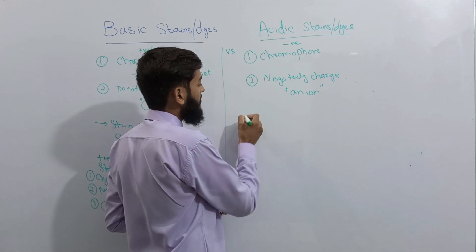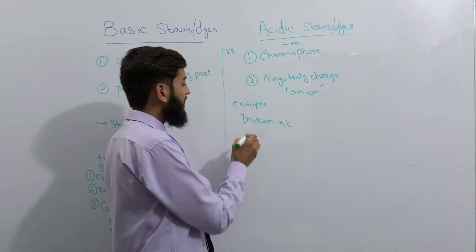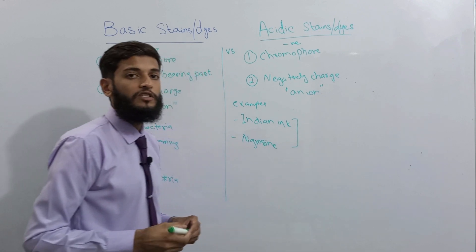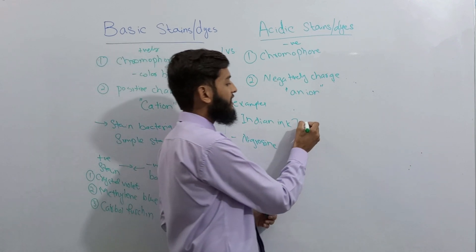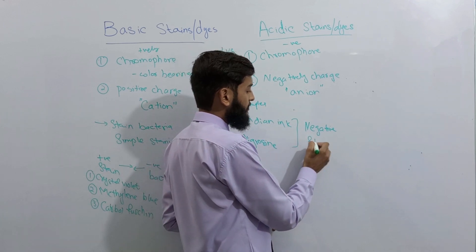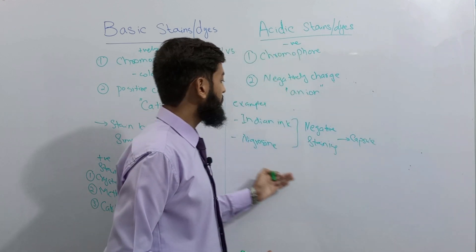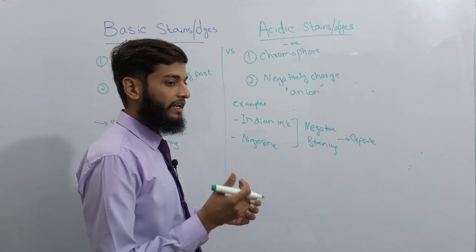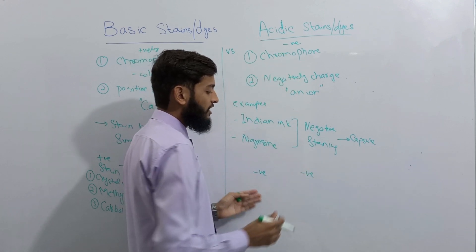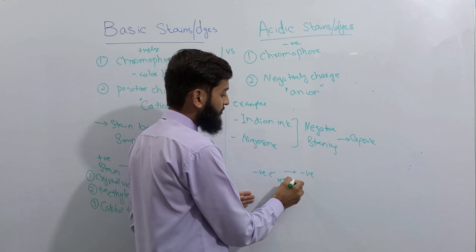Examples of acidic stains are Indian ink and nigrosine. Both of these stains are used in a procedure known as negative staining, which is used to detect whether a bacteria is having a capsule or not. So if a bacterium has a capsule and we use Indian ink or nigrosine, these acidic stains also have a negative charge on them. Since bacteria also have a negative charge, both will try to repel each other — so there will be repulsion between the bacteria and the stain.